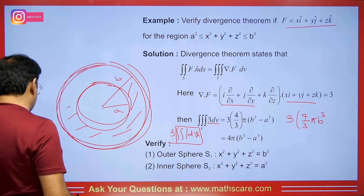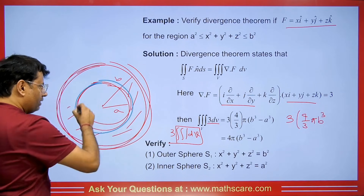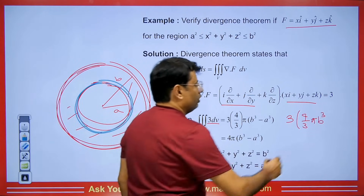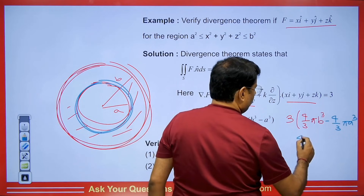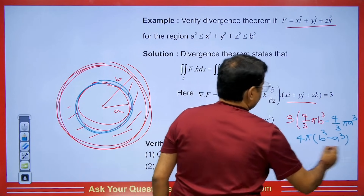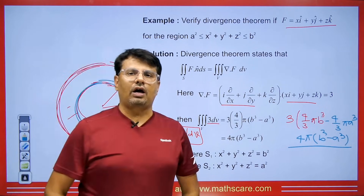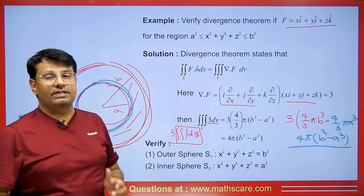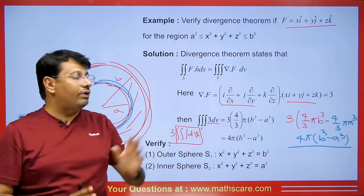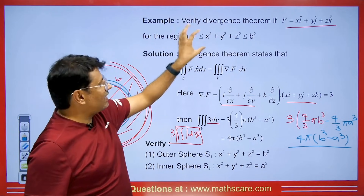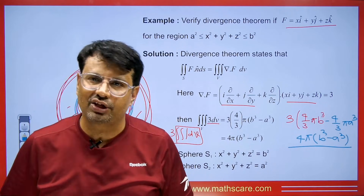So the value we get from the divergence theorem is 4π(b³ − a³). Sometimes in the exam they ask for verification, so you also have to find this value using the surface integral. With the help of the surface integral, we should get the same value — that's how it is verified. We converted it using the divergence theorem and solved it; without converting, we should also get the same answer.